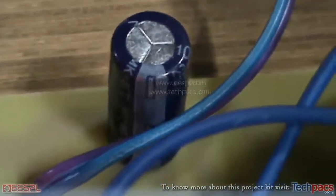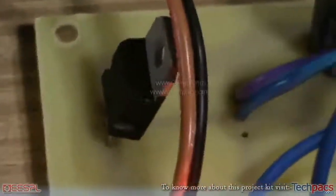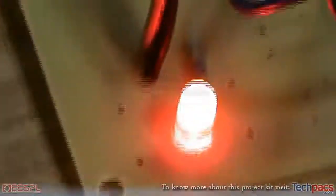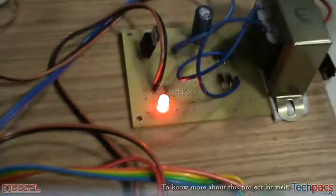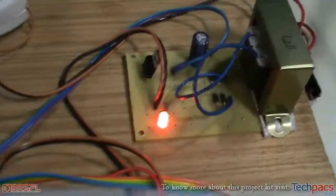Here a filtration capacitor is there used to filter the pulsating DC. We have a regulator to regulate the voltage and an indicator to indicate the presence of pure DC voltage.